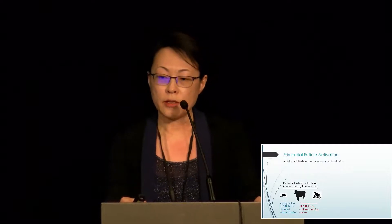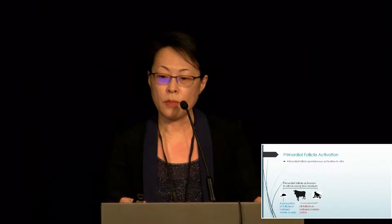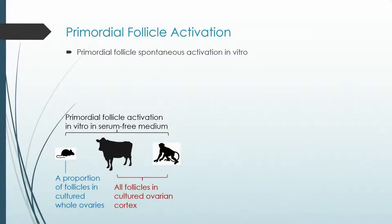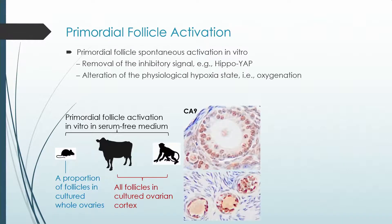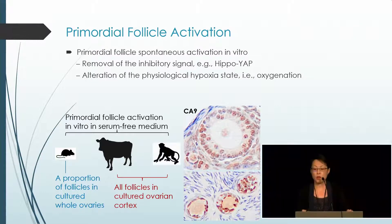The first step is to activate primordial follicles in the ovarian tissue. Primordial follicles can be activated spontaneously in vitro. Although ovarian tissue or ovaries are cultured in serum-free medium, a portion of primordial follicles are activated in cultured mouse ovary, and all primordial follicles are activated in cultured ovarian cortex from cows and monkeys. The reason for this could be the removal of inhibitory signals such as the Hippo-YAP signaling pathway, and the alteration of the physical hypoxia state of the follicles.